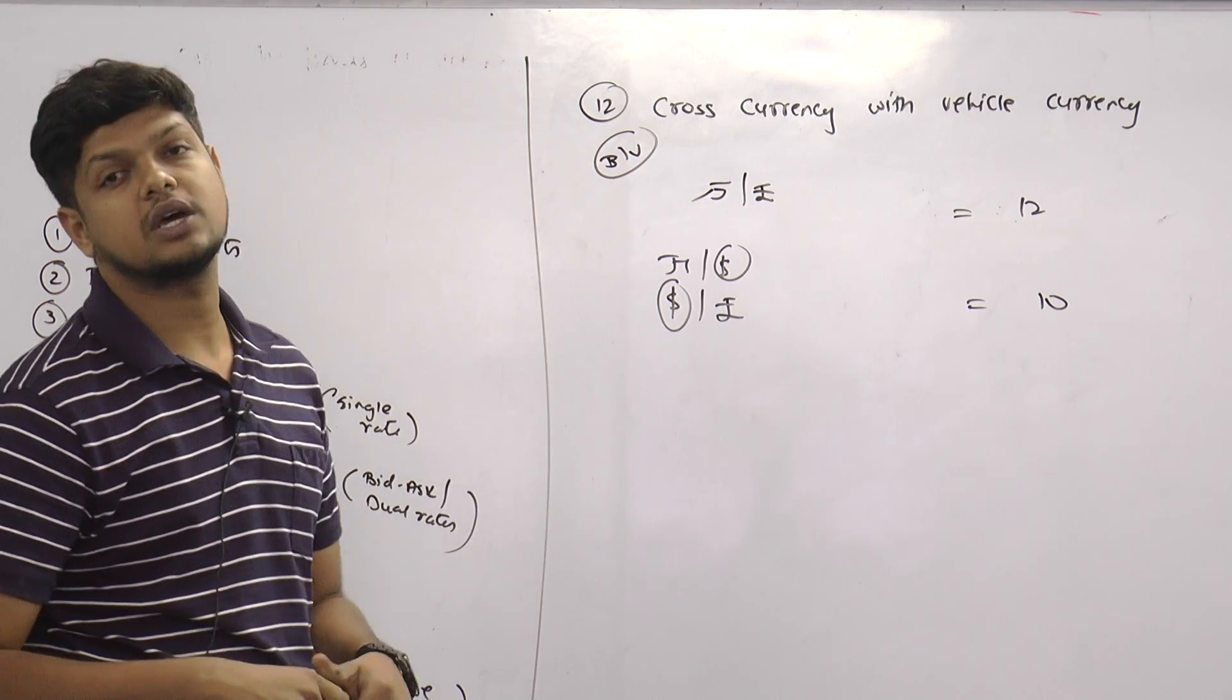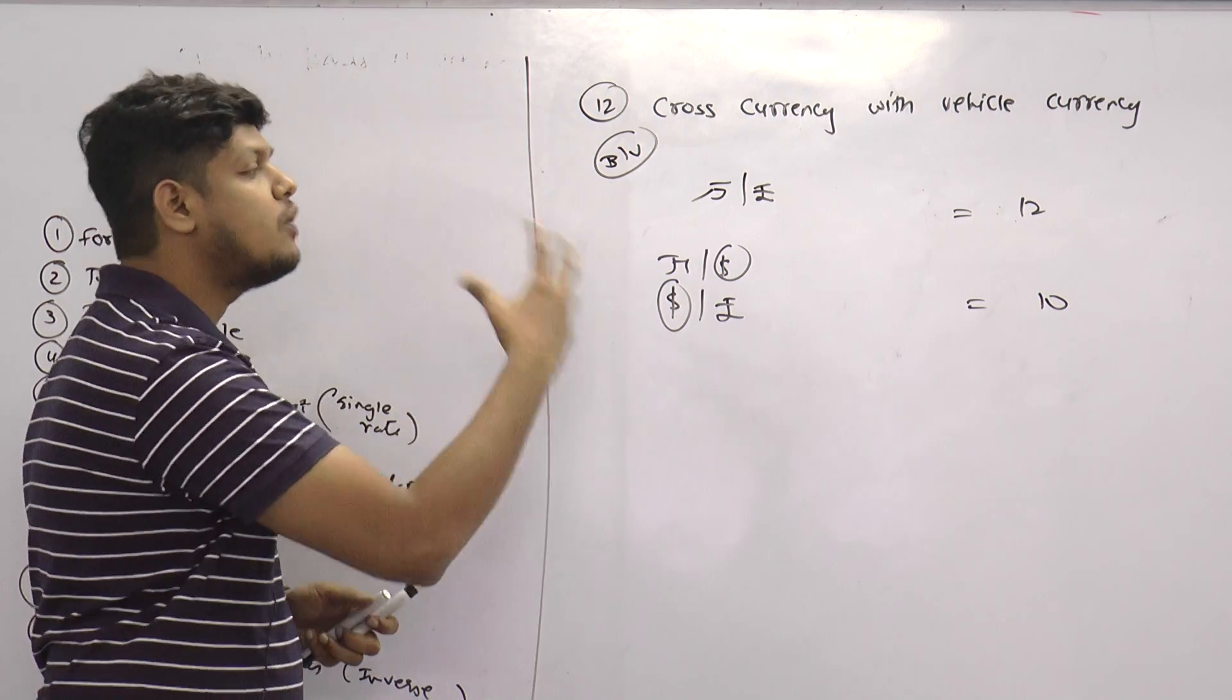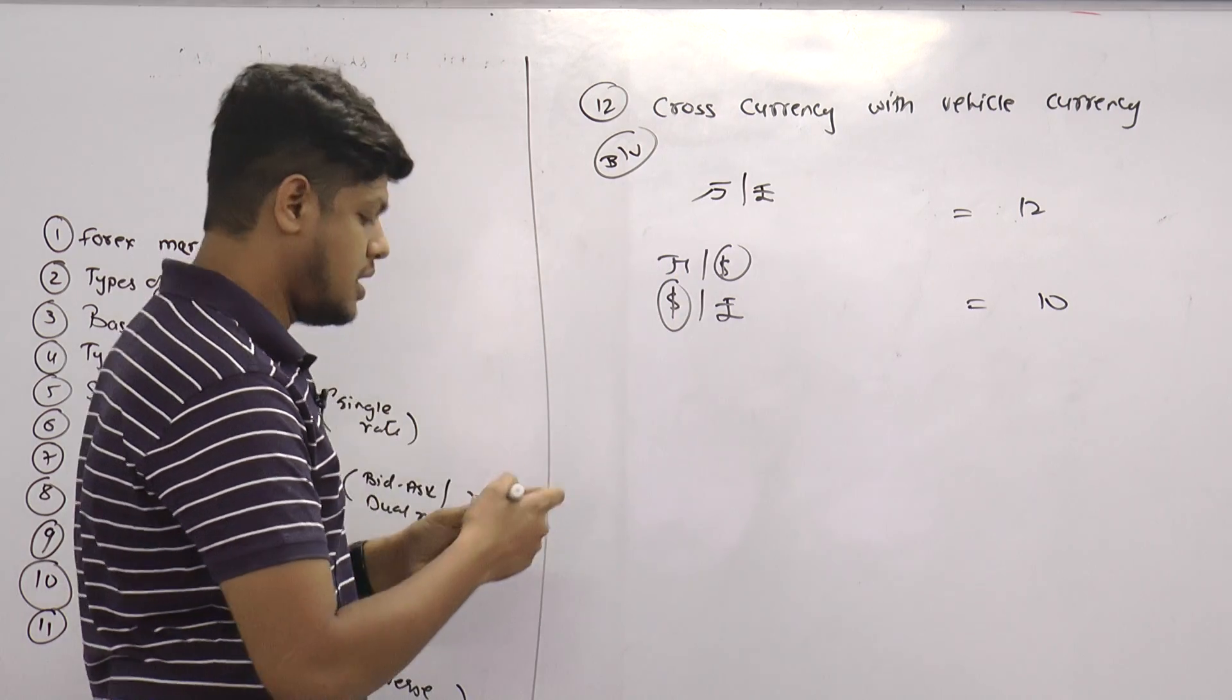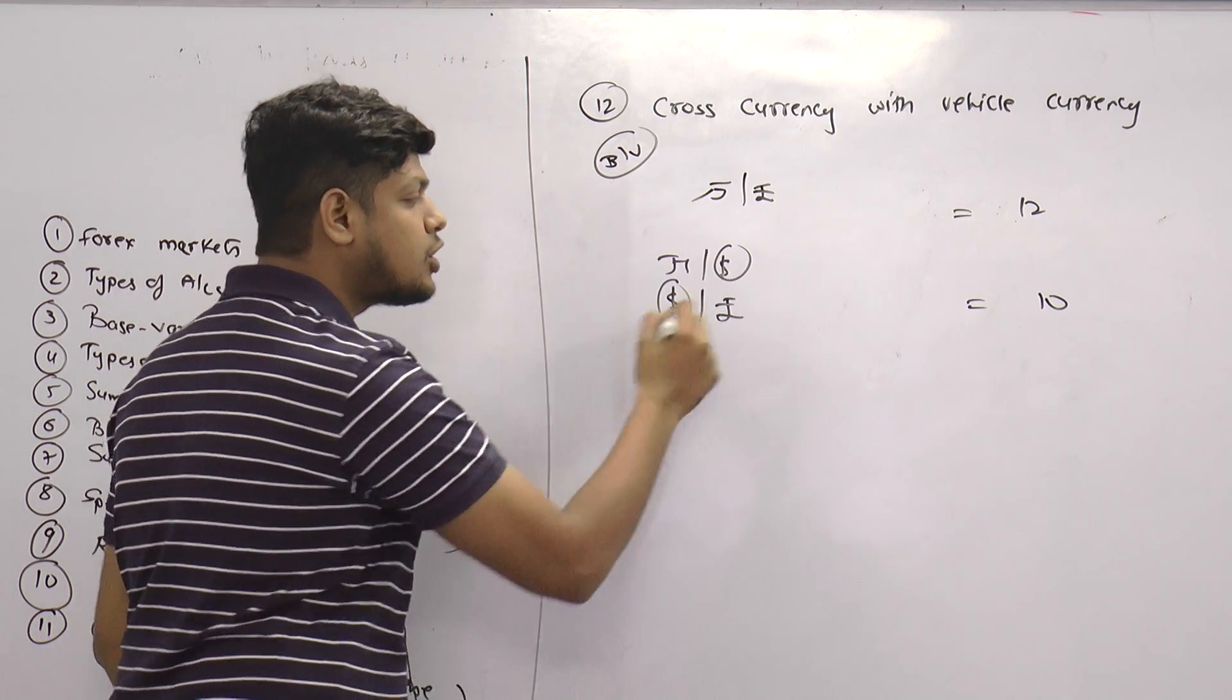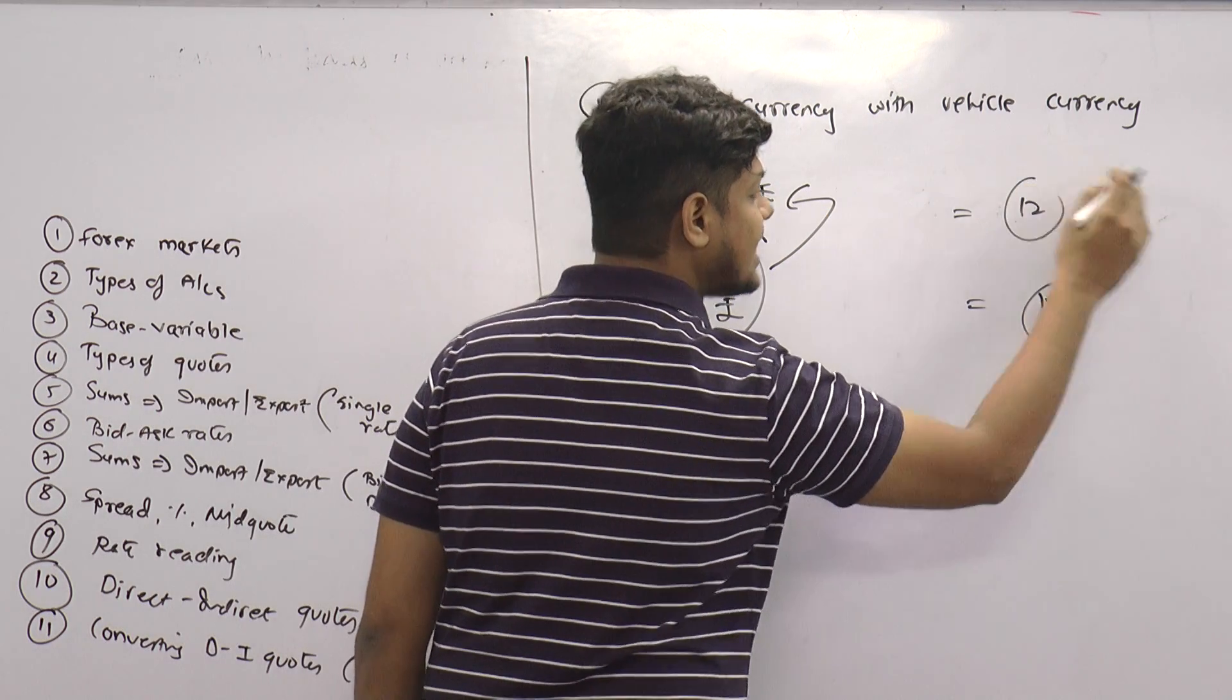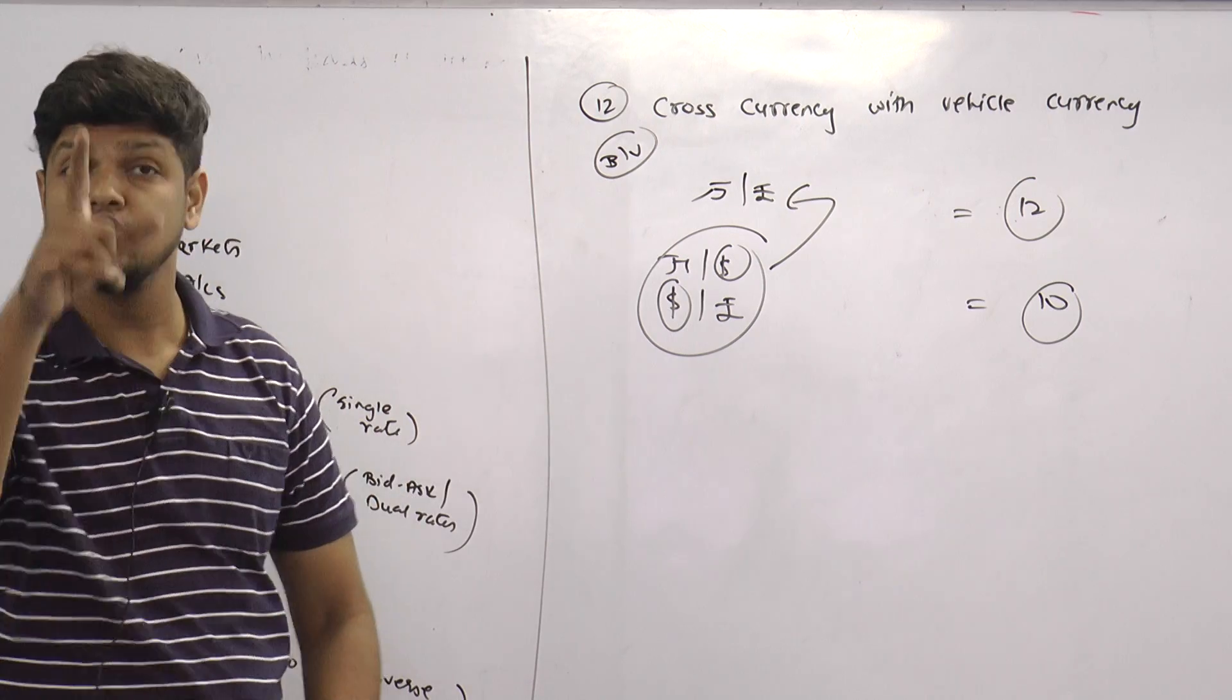This is the concept of cross currency that we are going to do now. Two things we are going to do here. First is that we are going to calculate this into a Yuan-Rupee quote. We have Yuan-Dollar and Dollar-Rupee quote. We need to convert this into a Yuan-Rupee quote and we need to identify how much are we saving.